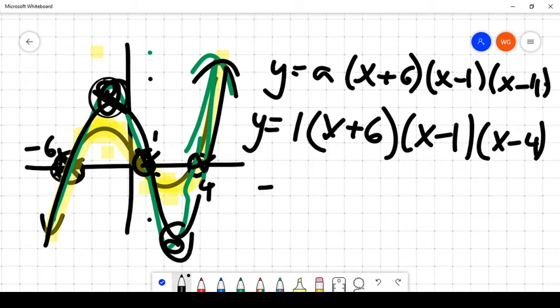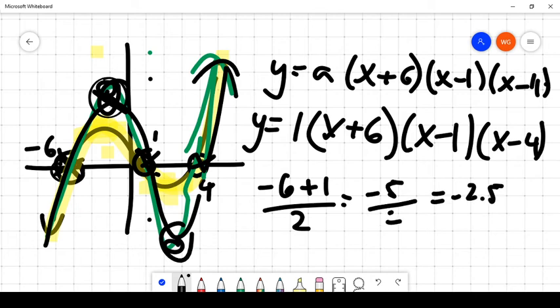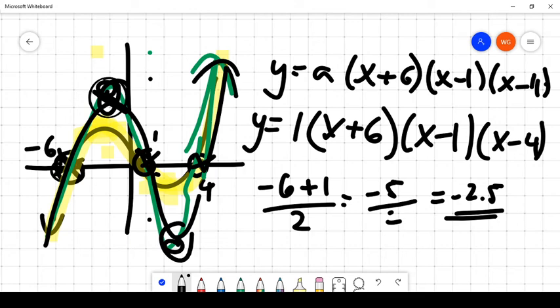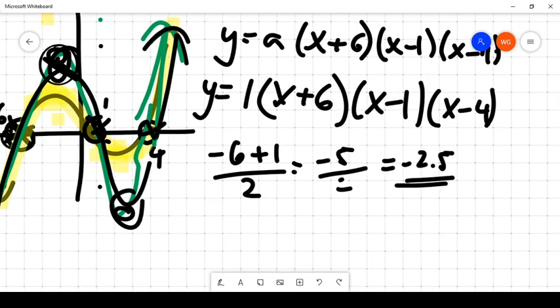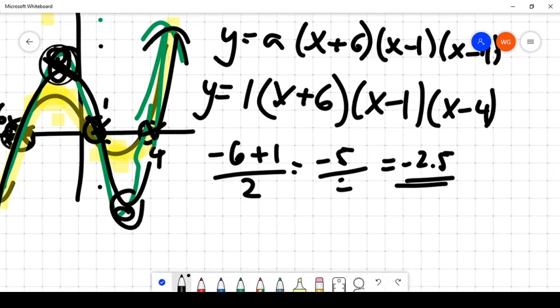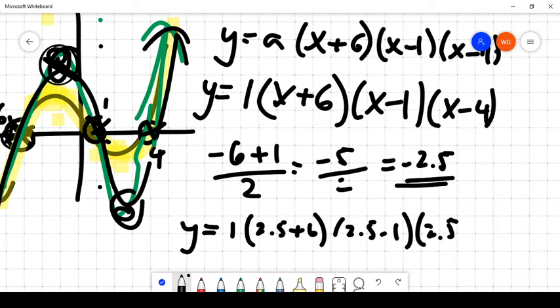So what is the midpoint between negative 6 and positive 1? Well, negative 6 plus 1 divided by 2 is negative 5 over 2. So that's equal to negative 2.5. So then what I would do is I would simply plug in negative 2.5 into my equation, and I would use that as my estimate for the place where the local maximum is located. So in this case, that would be y equals 1 times (negative 2.5 plus 6) times (negative 2.5 minus 1) times (negative 2.5 minus 4).